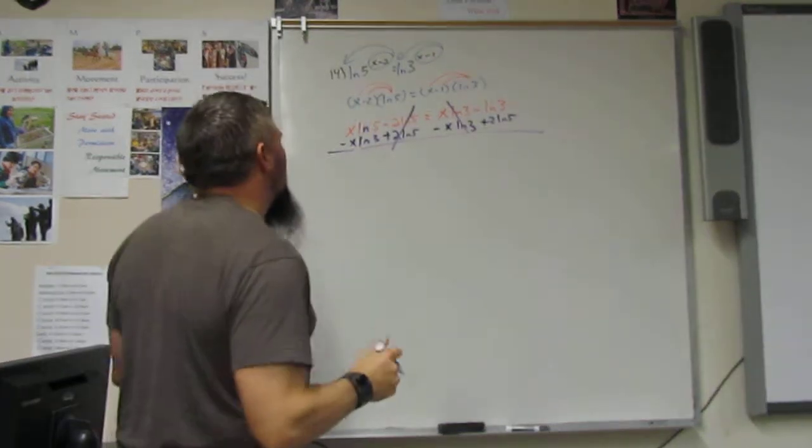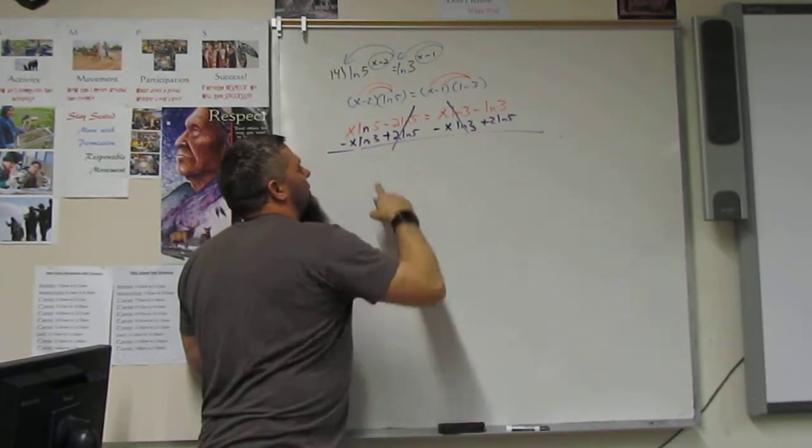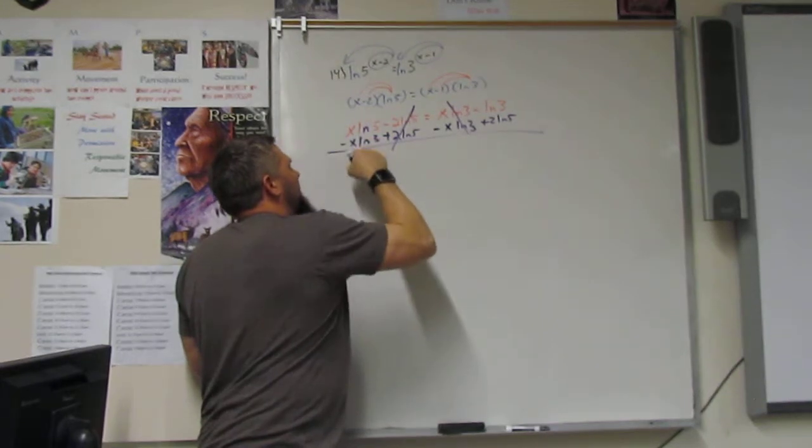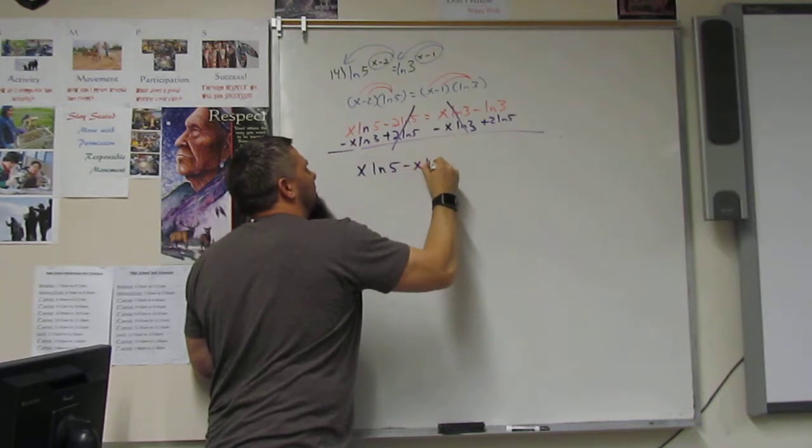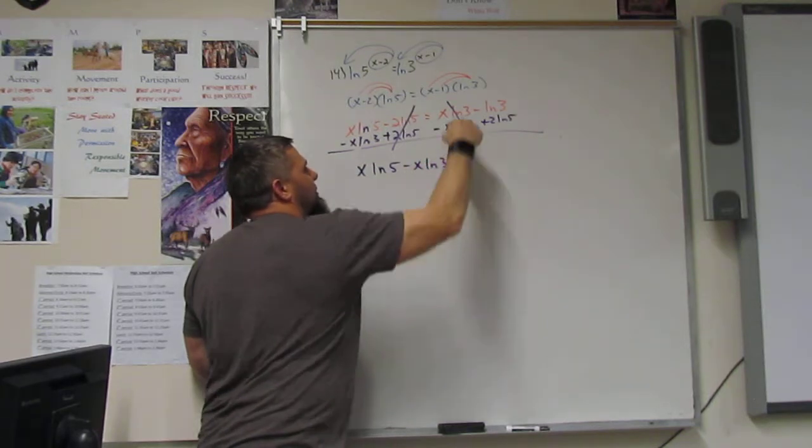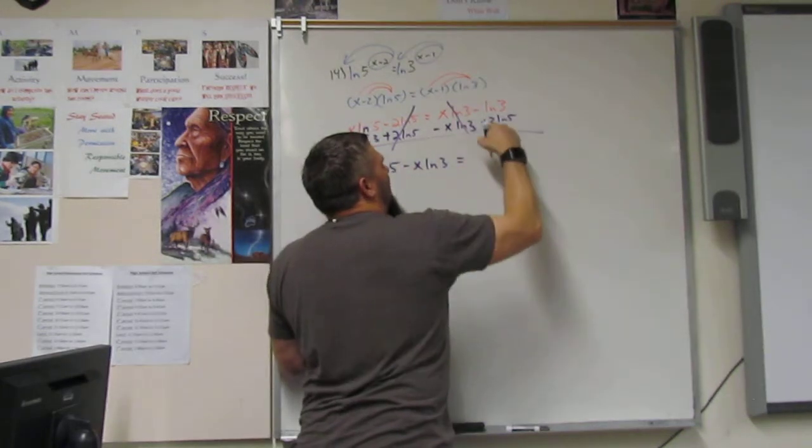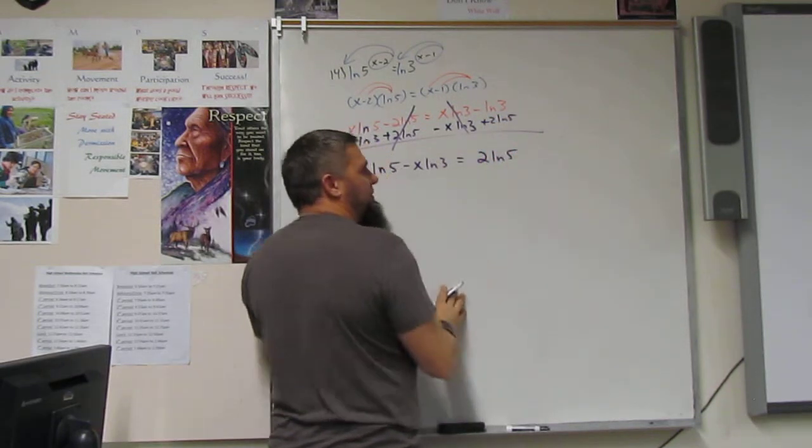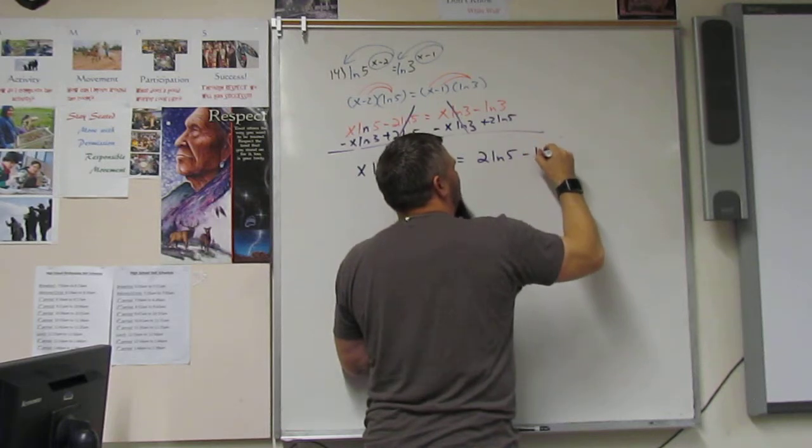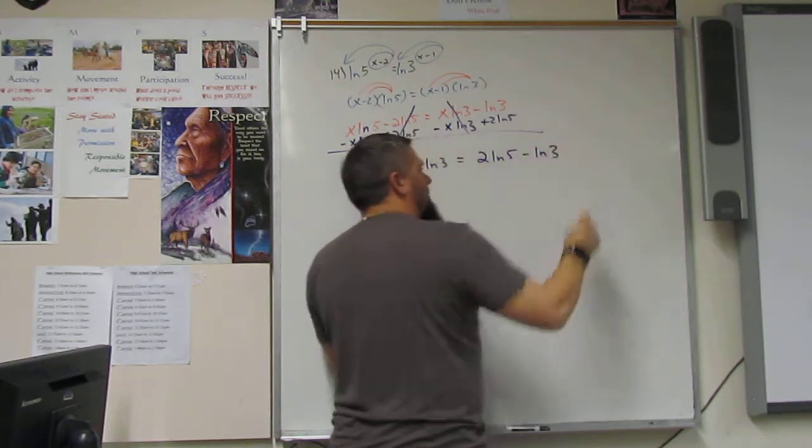And so, this becomes x ln 5 minus x ln 3, which equals, and I'm going to put the positive one first, 2 ln 5 minus ln 3.